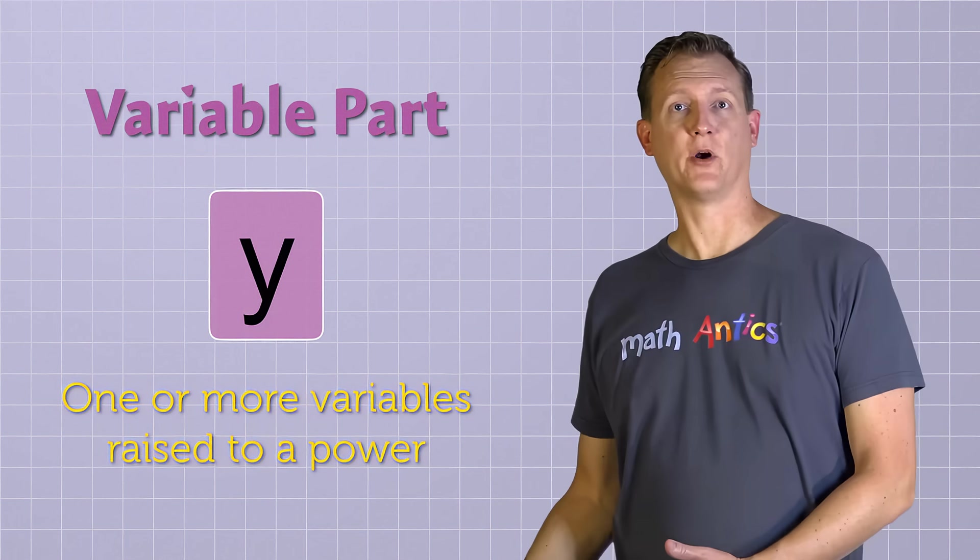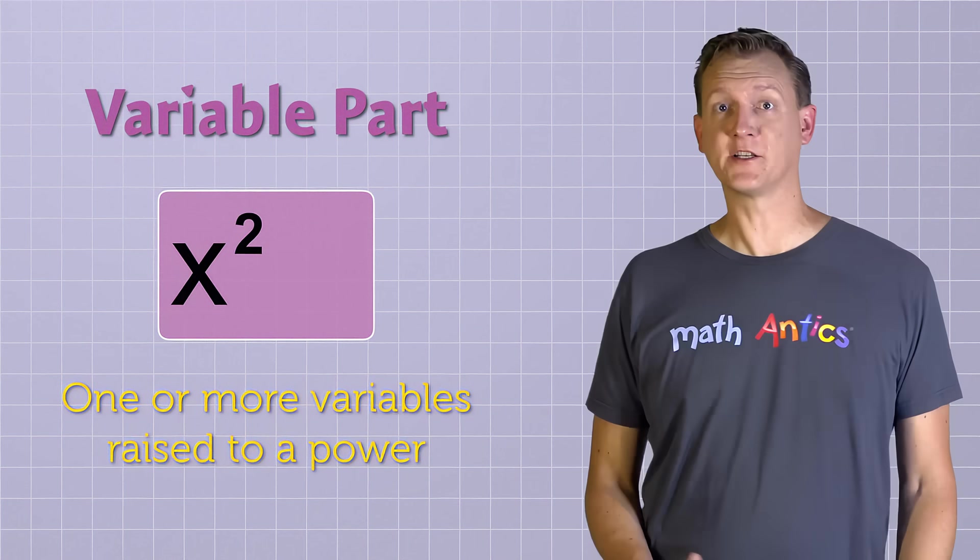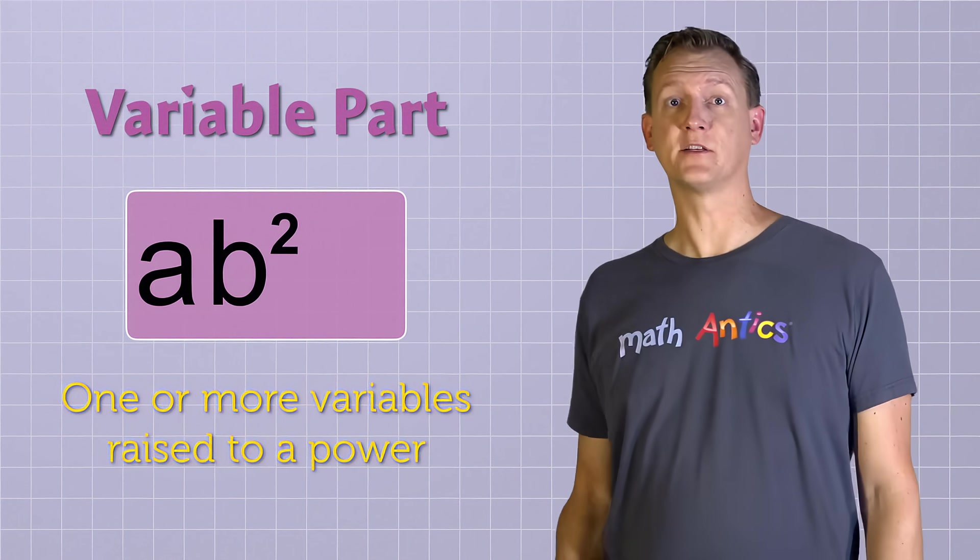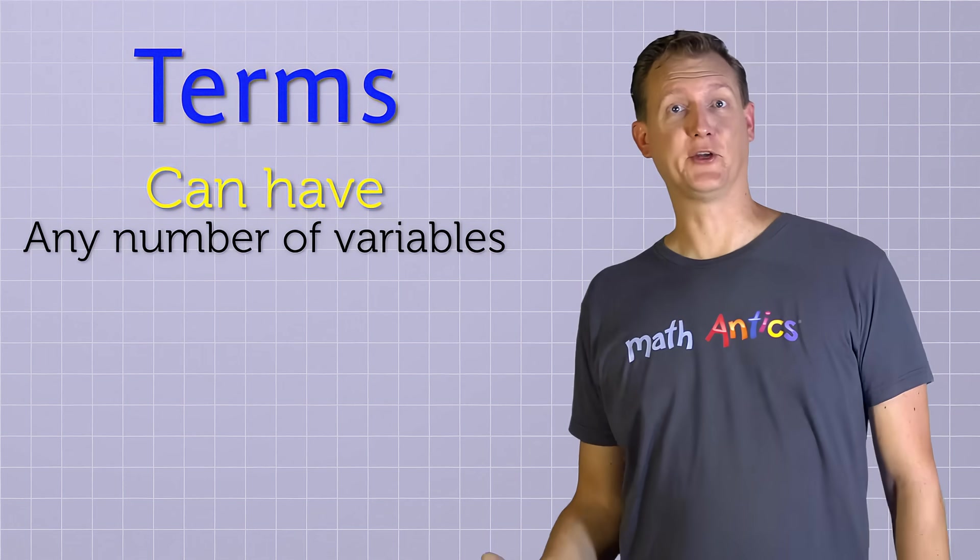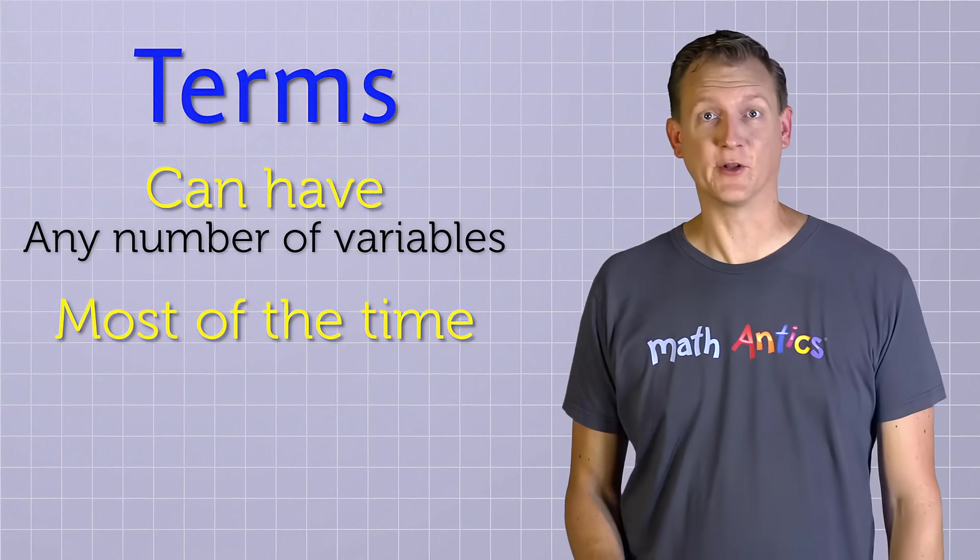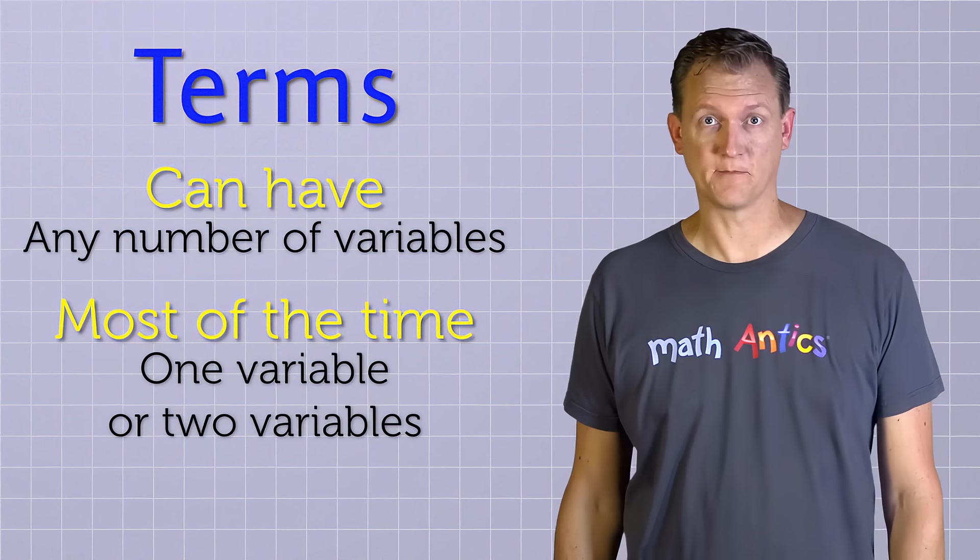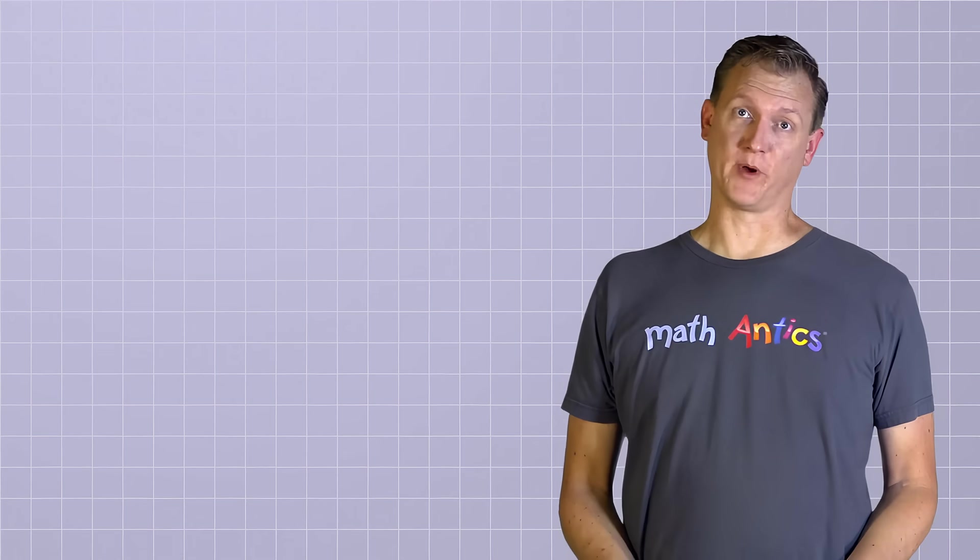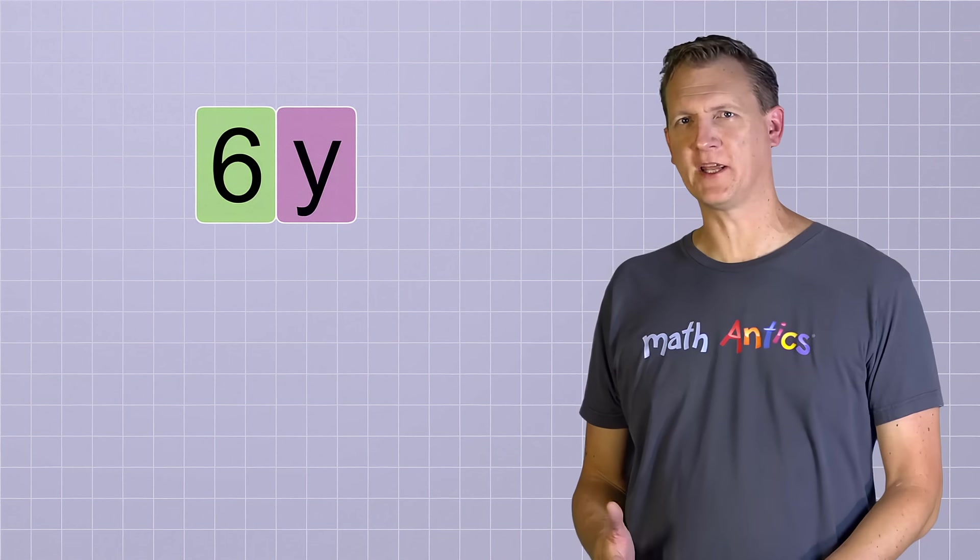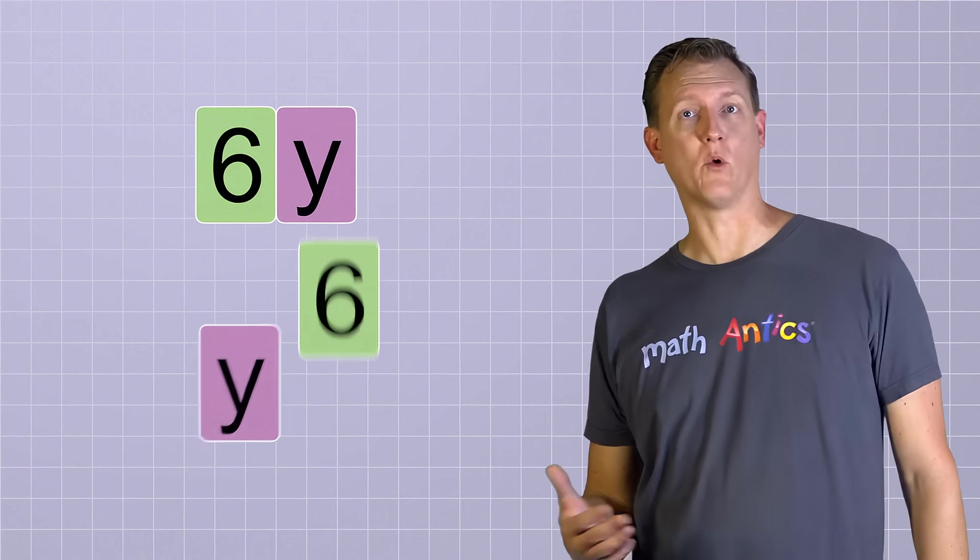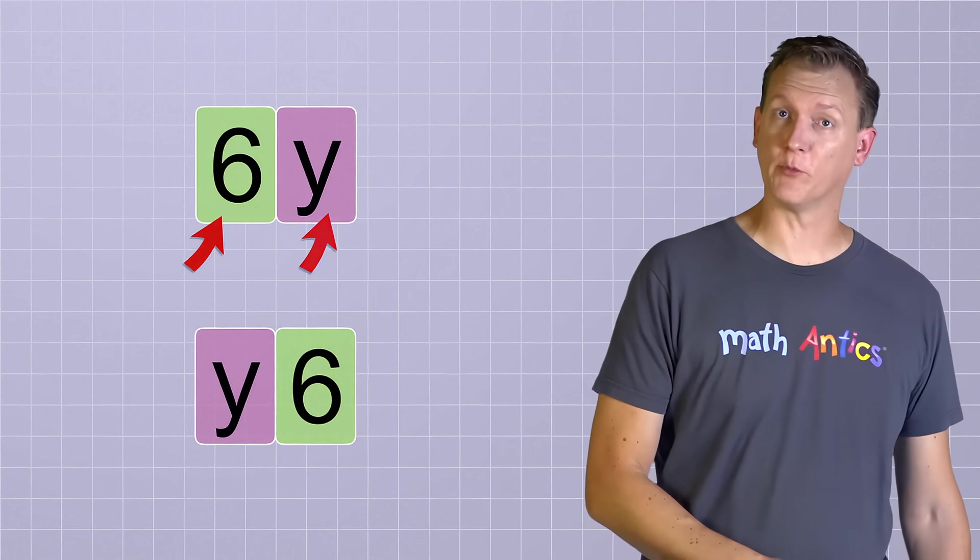Or the variable part of a term could be some tricky combination of variables that are raised to powers, like x squared times y squared, or a times b squared times c cubed. Terms can have any number of variables like that. But the good news is that most of the time, you'll only need to deal with terms that have one variable, or maybe two in complicated problems. Oh, and there's one thing I should point out before we move on. If you have a term like 6y, even though it would be fine to do the multiplication the other way around and write y6, it's conventional to always write the number part of the term first and the variable part of the term second.